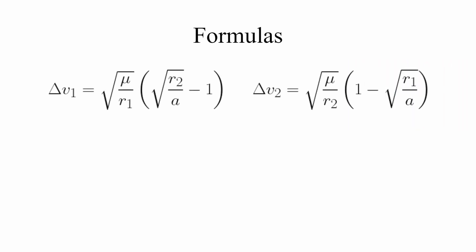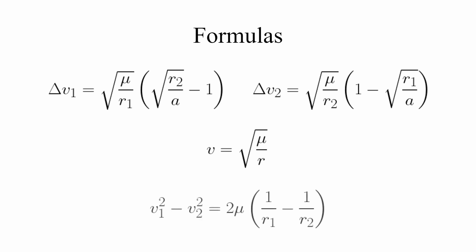Let's get started by introducing the formulas we'll be using. All of these were first introduced in my Vis-Viva video, so if you want to know where they come from or more on how to use them, that's the place to look. First, we have our two Vis-Viva equations that are quite frankly a staple of this series. Second is another familiar formula that calculates the orbital velocity of a circular orbit. And third is this lovely little formula which relates the altitudes and velocities of any two points in any trajectory when solely under the influence of gravity, whether it's in orbit or not.